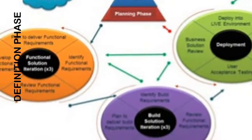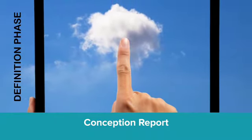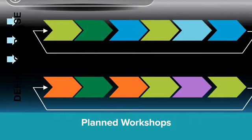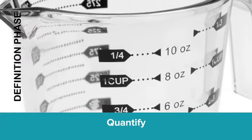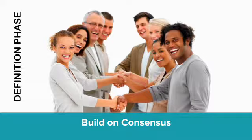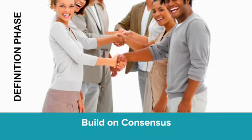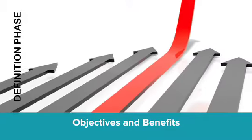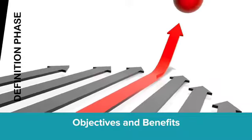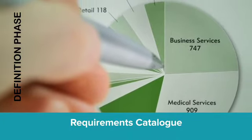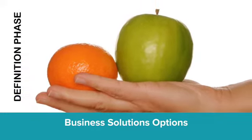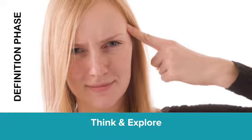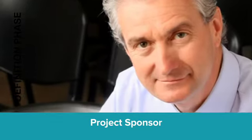The definition phase builds on the business challenge statement published in the conception report and works through the planned workshops. Support the business challenge with facts and quantify it in a monetary value. Discuss, define, and agree on the business objectives and expected business benefits. Create the first business requirements catalogue, explore business solution options, and draft your recommendations to senior management. Publish the feasibility study report.